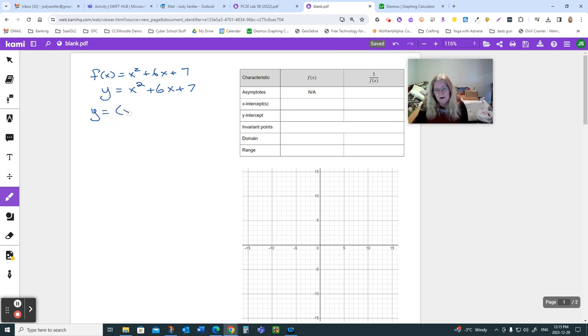Half of 6 is 3, squared is 9. So I end up with that, which tells me that my vertex is at negative 3, negative 2.